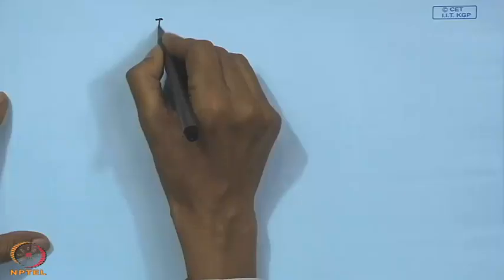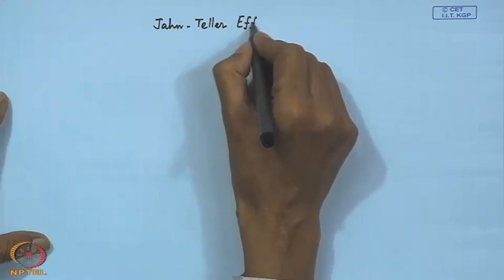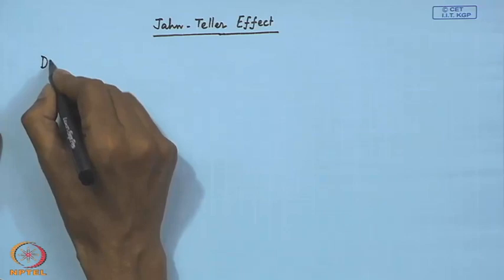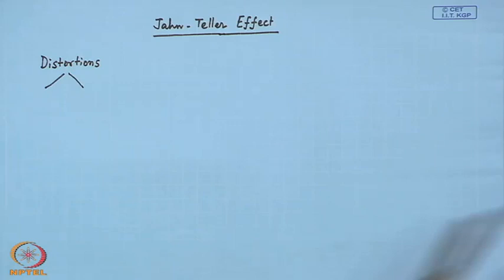Good evening, everybody. Today we will talk about another type of distortion, which we will consider as the Jahn-Teller effect. For the two types of distortions we have seen so far, which are basically tetragonal type.